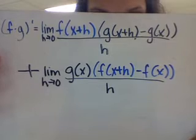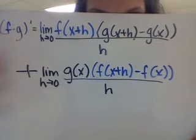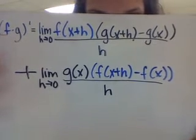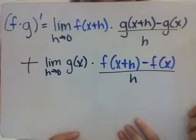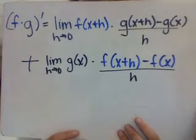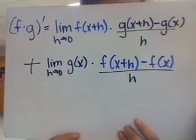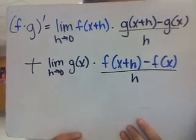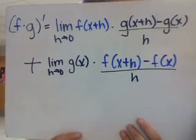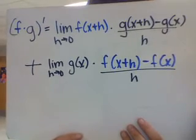That seemed to work. Now let's split it up and rewrite it again. Oh! Now we can use the limit property! That's right. How would you suggest we rewrite it now? Like this!